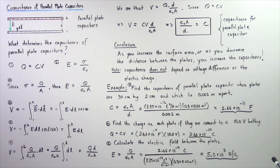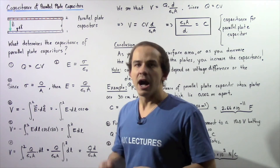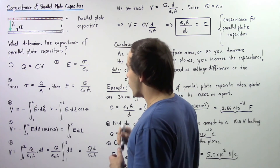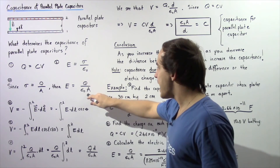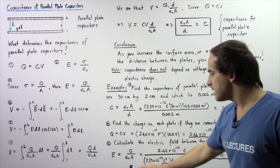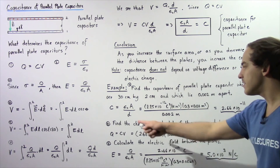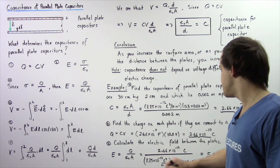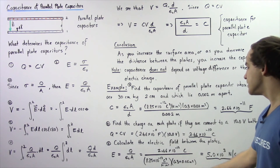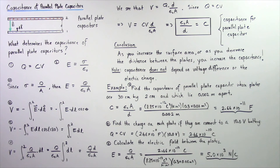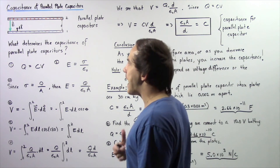In part C, we calculate the electric field between the plates. The electric field is constant and given by E = Q/(ε₀A). Using the charge found in part B, Q = 2.66 × 10⁻¹⁰ C, divided by epsilon naught and our area 0.3 × 0.02 m², we get an electric field of approximately 5,000 N/C between the two plates.